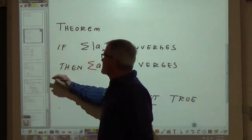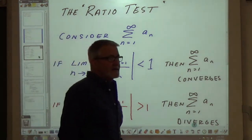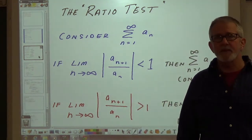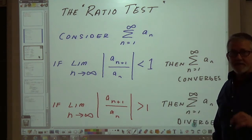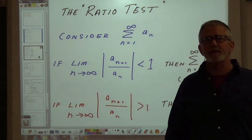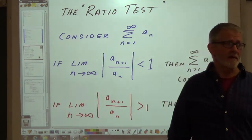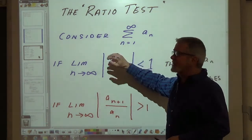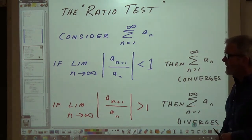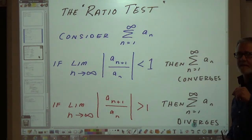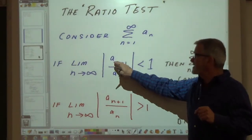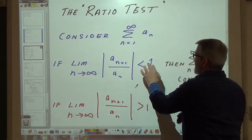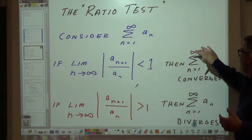Let's define what the ratio test is. I want to try to keep this video as short as possible — about 20 to 25 minutes. At any time you can press the pause button, take some notes, and think. There are going to be a couple of examples you'll certainly want to pause on. Consider some series from n equals 1 to infinity of a_sub_n. If the limit as n goes to infinity of the absolute value of a_sub_(n+1) divided by a_sub_n is less than 1 — hence the ratio test — then that series converges.